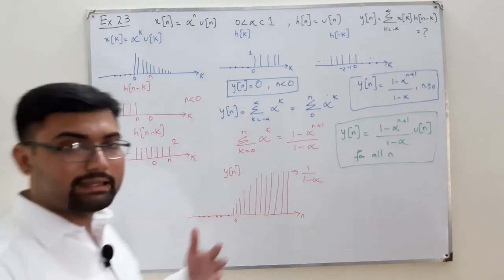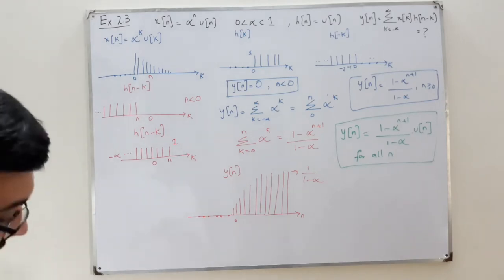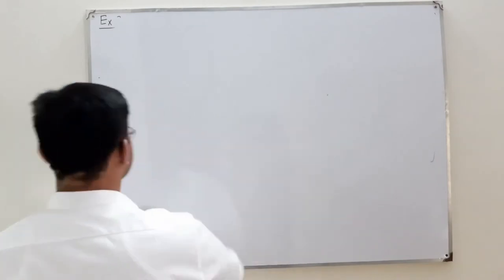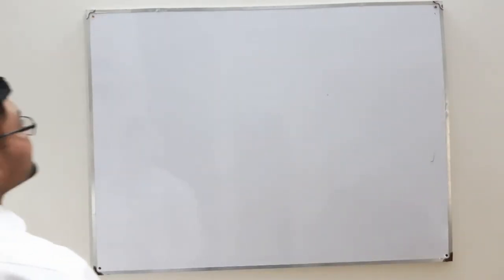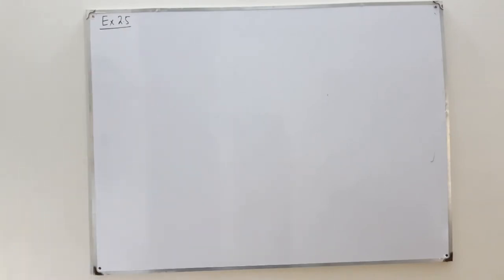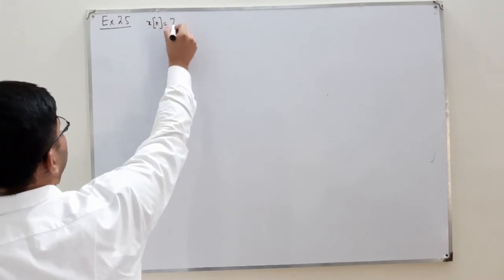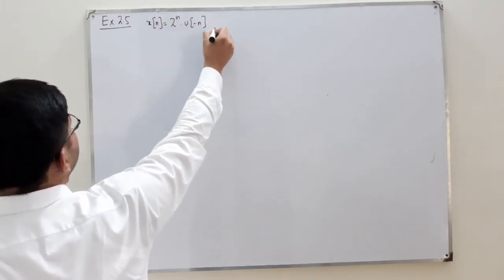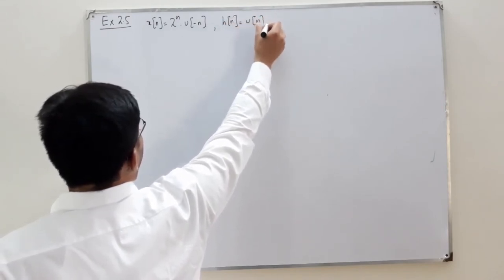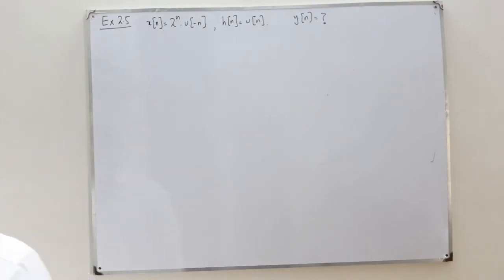Example 2.4 is a little lengthy and has some problems, so I will do it in the next video. In this video, I go directly to example 2.5. The question is that x(n) equals 2 to the power n times u(minus n), and the impulse response is h(n) equals u(n). The output y(n) is unknown.